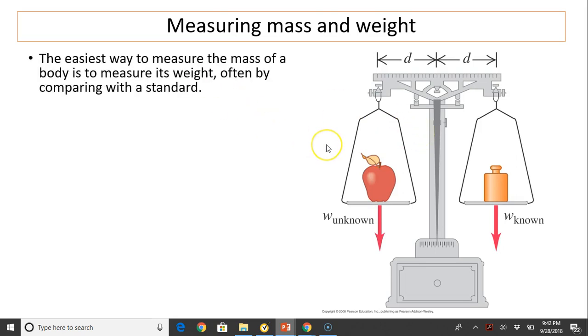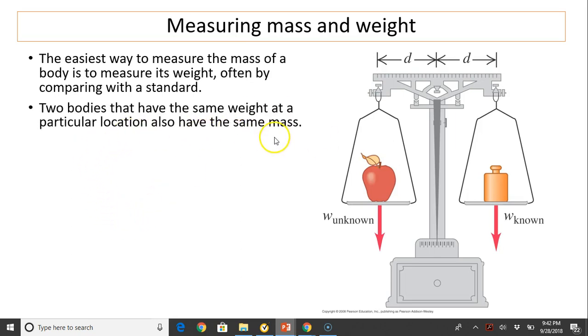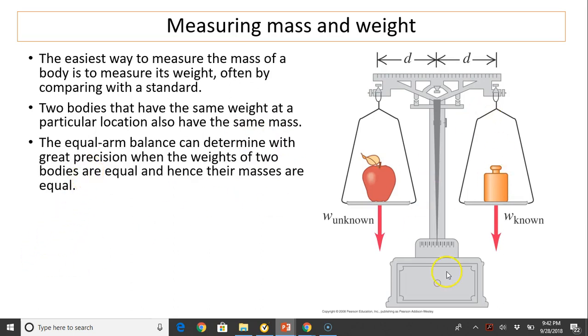Measuring mass and weight. The easiest way to measure mass, as we have done in the lab, is to measure through its weight. We use triple beam balance. Two bodies have the same weight also must have the same mass. So this is a picture of equal arm balance that can determine with great precision when the weights of the two bodies are equal, and hence their mass has to be equal. If we have a known value of mass, we can determine the other unknown value of mass using this equal arm balance.